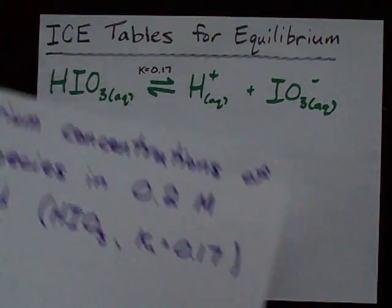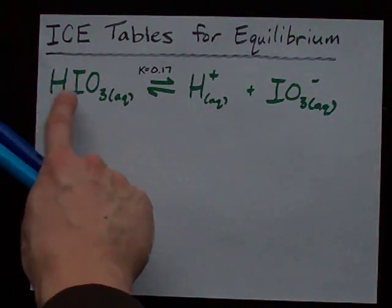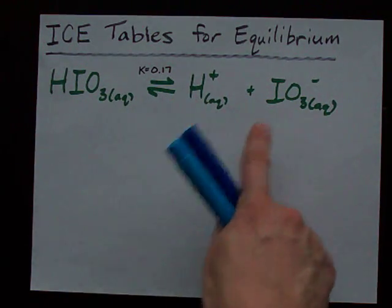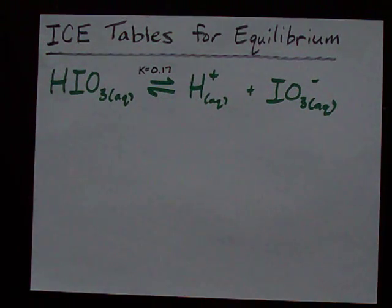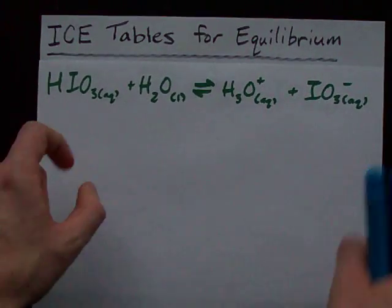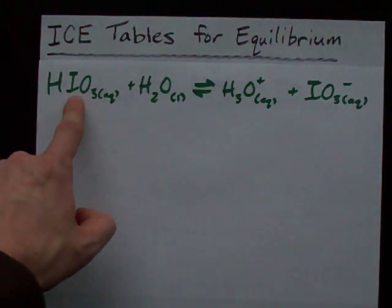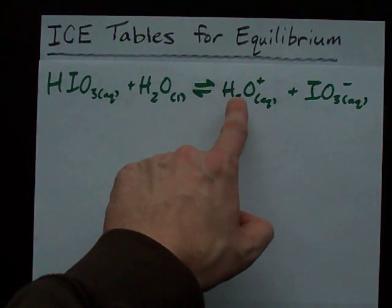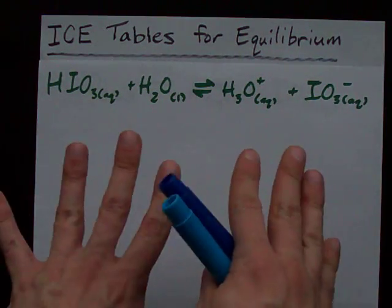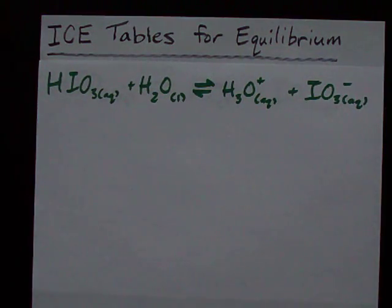I've written out this particular equilibrium. We have iodic acid dissociating into H+ and the iodate ion. You may prefer to write it where the iodic acid reacts with water to give you hydronium and iodate. It's the same thing.